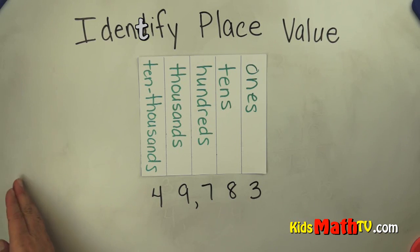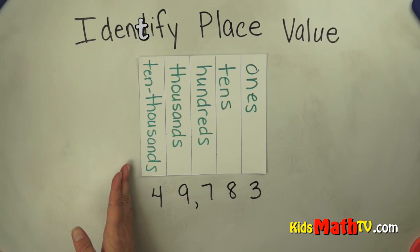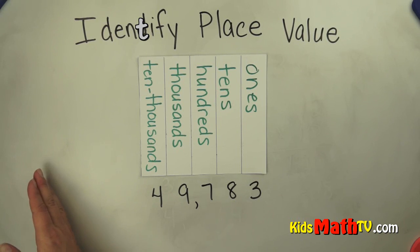This place value chart could actually keep going: hundred thousands, millions, ten millions, and so on.